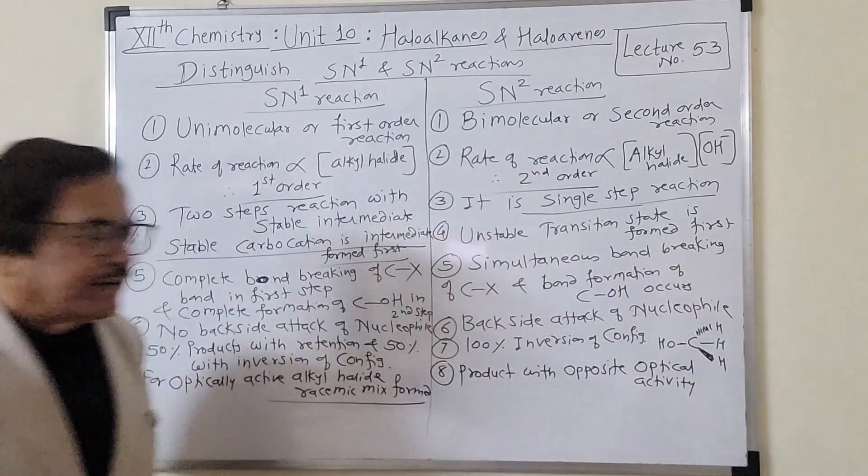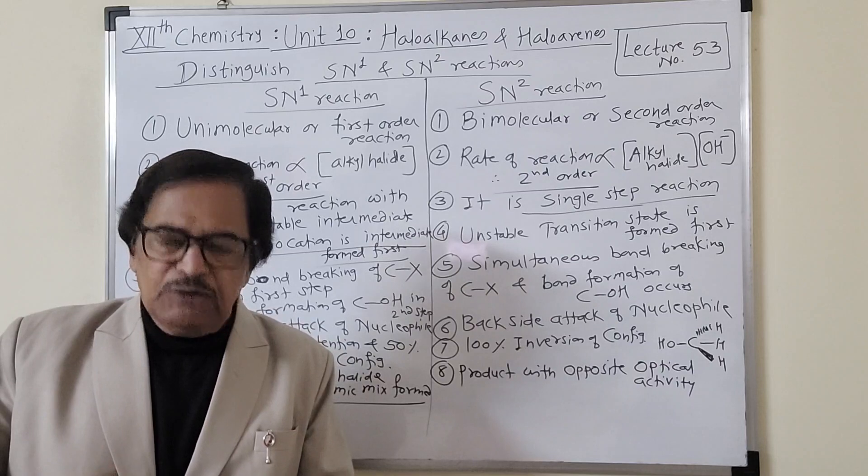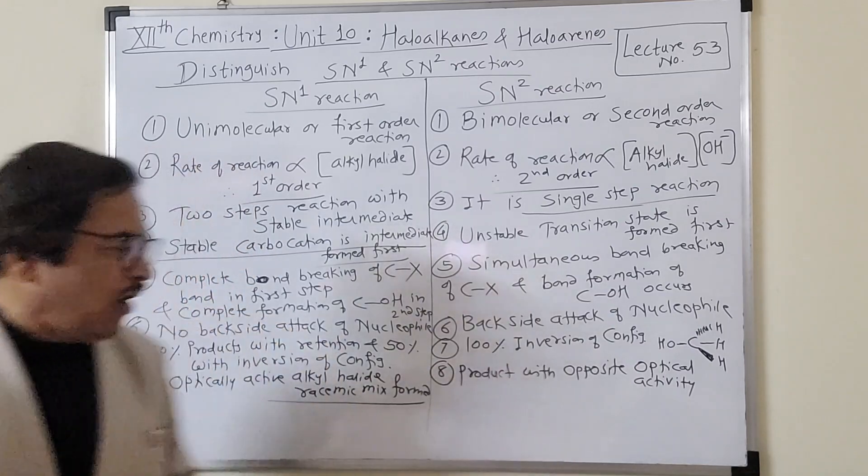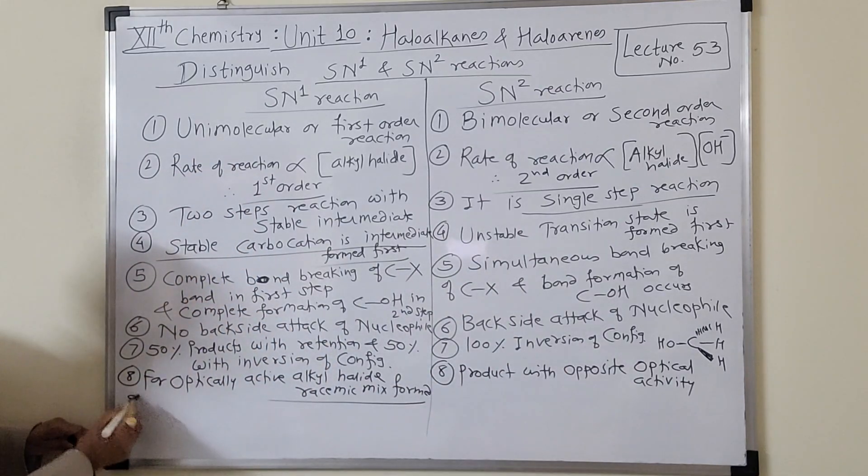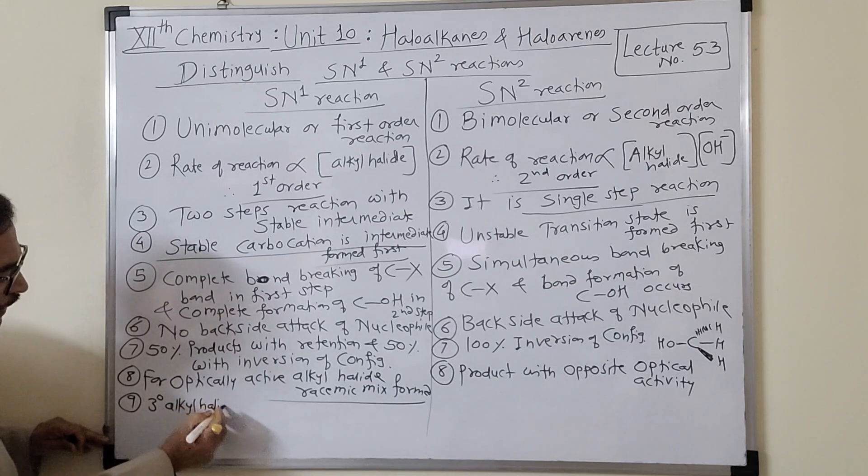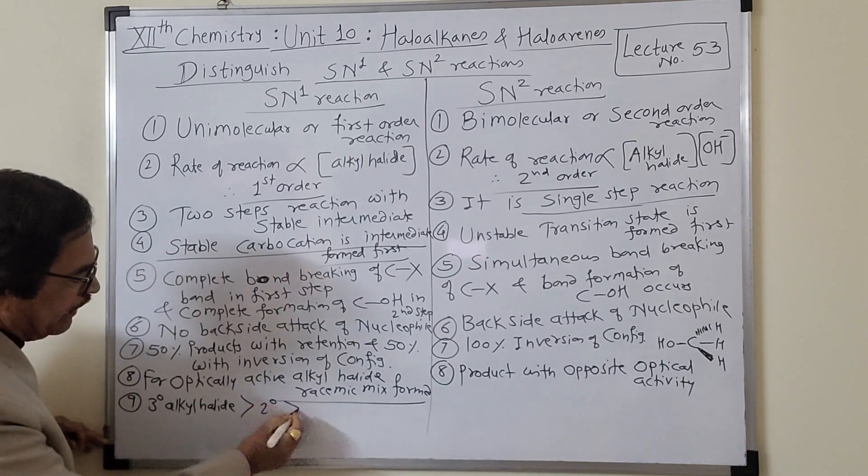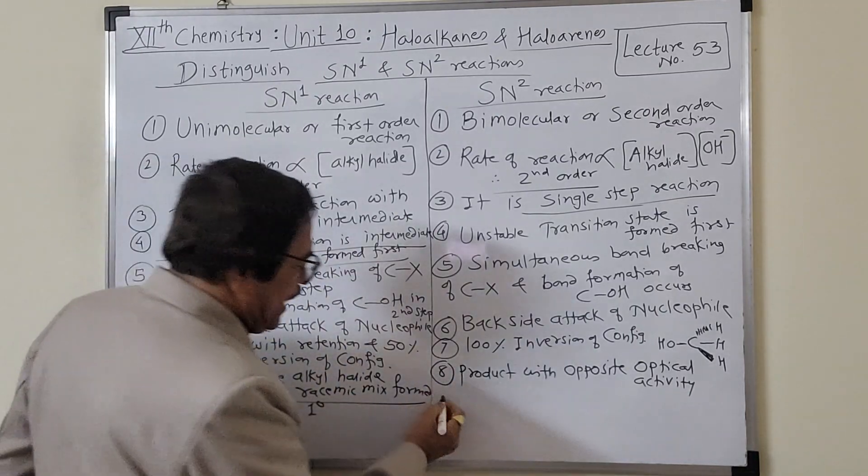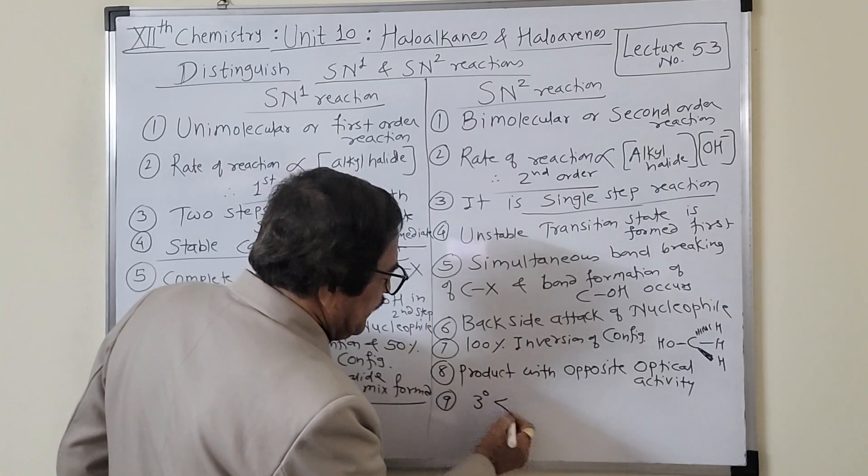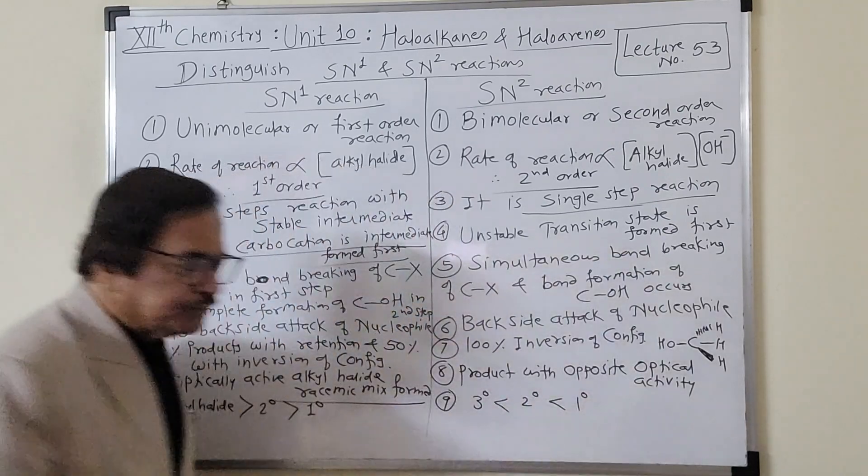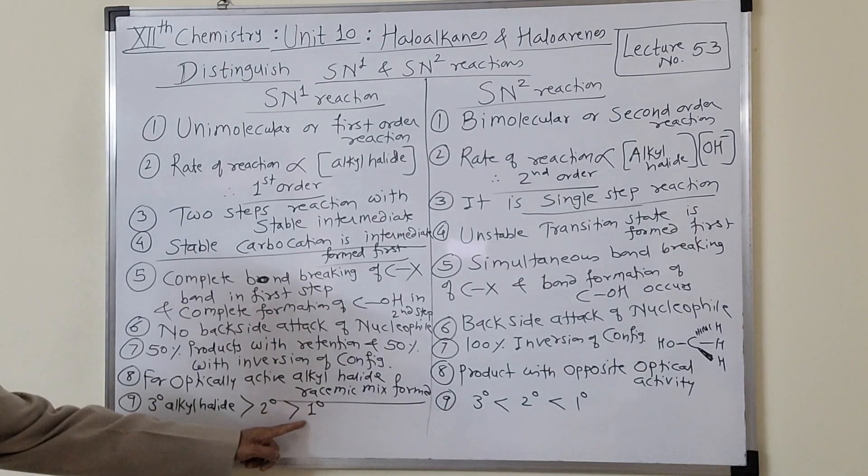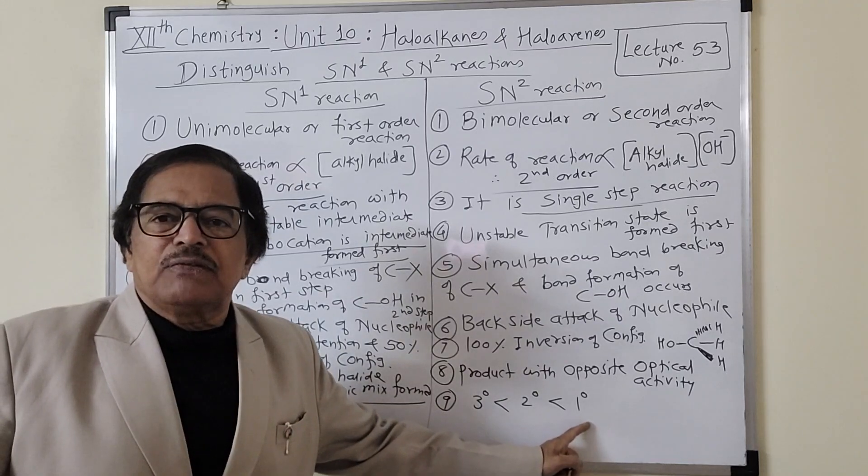Order of reactivity for SN1: tertiary alkyl halide has maximum reactivity, then secondary, then primary. For SN2, it's the opposite - tertiary has minimum reactivity, then secondary, then primary. Primary alkyl halide has the maximum rate for SN2.